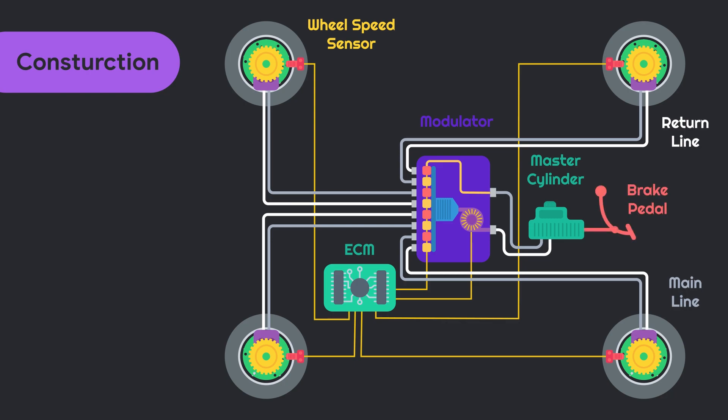Brake pedal is connected with master cylinder while brake light switch is also connected with the ECM. When driver applies the brake, with help of brake light connection, ECM detects the movement of brake pedal and determines the speed of vehicle with wheel speed sensors.